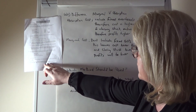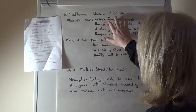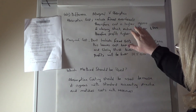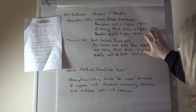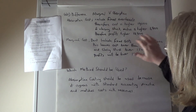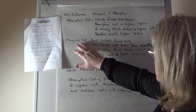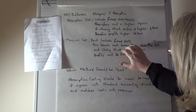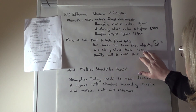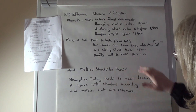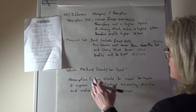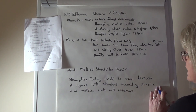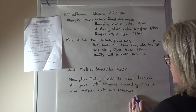Part B two is theory: outline the difference between marginal and absorption costing and indicate which should be used for financial accounting purposes. Absorption costing includes fixed overheads so costs are higher at 19,000 and closing stock is valued higher at 1,900. Marginal costing excludes fixed overheads, giving lower costs of 15,000 and closing stock of 1,500. For financial accounting purposes, absorption costing should be used because it agrees with standard accounting practice and conventions, and matches costs with revenues when they occur.